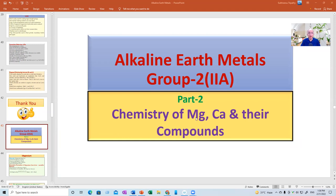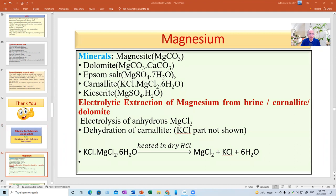This is part two chemistry of magnesium, calcium and their important compounds. Now magnesium has several ores, minerals like magnesite, dolomite, epsom salt that is MgSO4.7H2O, carnelite which is widely available throughout the world KCl.MgCl2.6H2O, and kieserite. Since magnesium like other alkali metals and even aluminium they are extracted electrolytically from their fused salts, that is more economical than any chemical method.